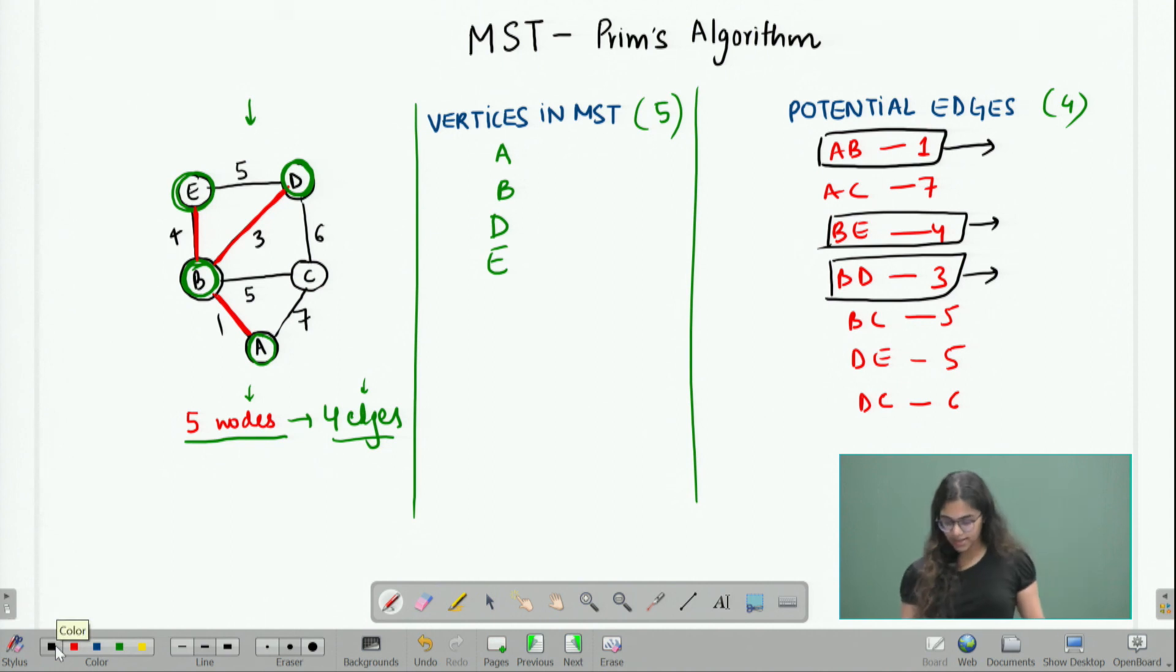So, I go back to my list again and I look for the smallest possible candidates here. Now, I see that there is ED with weight 5, but I do not need to really include ED because ED connects D and E, both of which have already been included in my MST. So, there is no point including this edge into my MST, it is unnecessary. So, next I look at BC which is also of weight 5.